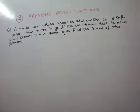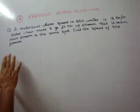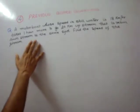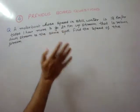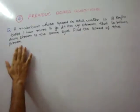A motorboat whose speed in still water is 18 kilometers per hour takes one hour more to go 24 kilometers upstream than to return downstream to the same spot. Find the speed of the stream.